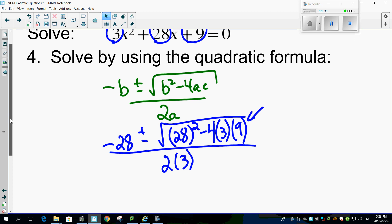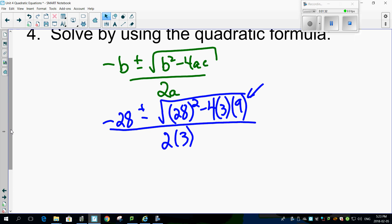Gives us 26. So if you look here, this whole mess right here, this thing right here, ends up being 26. So we've got minus 28 plus or minus 26 over 6.